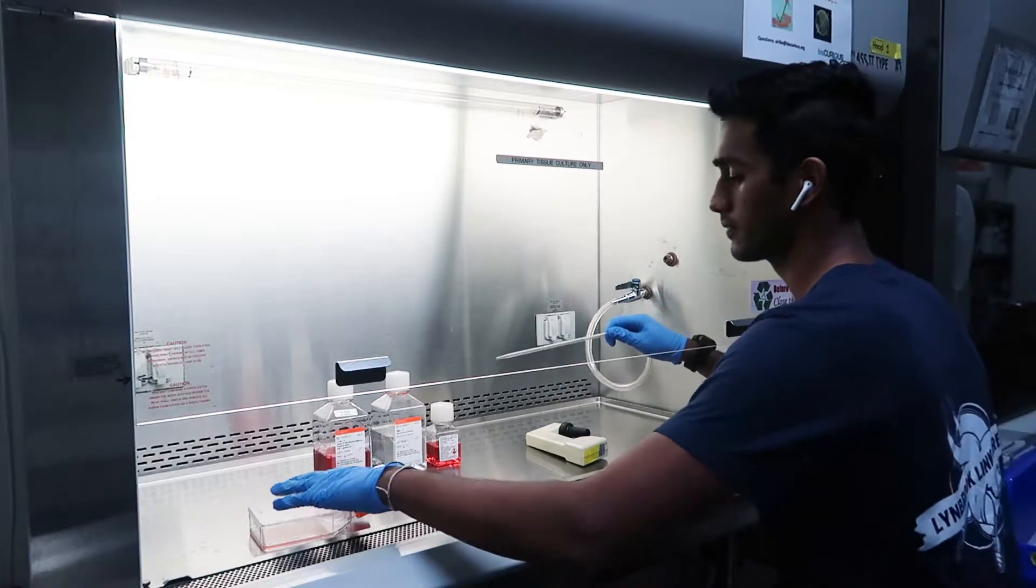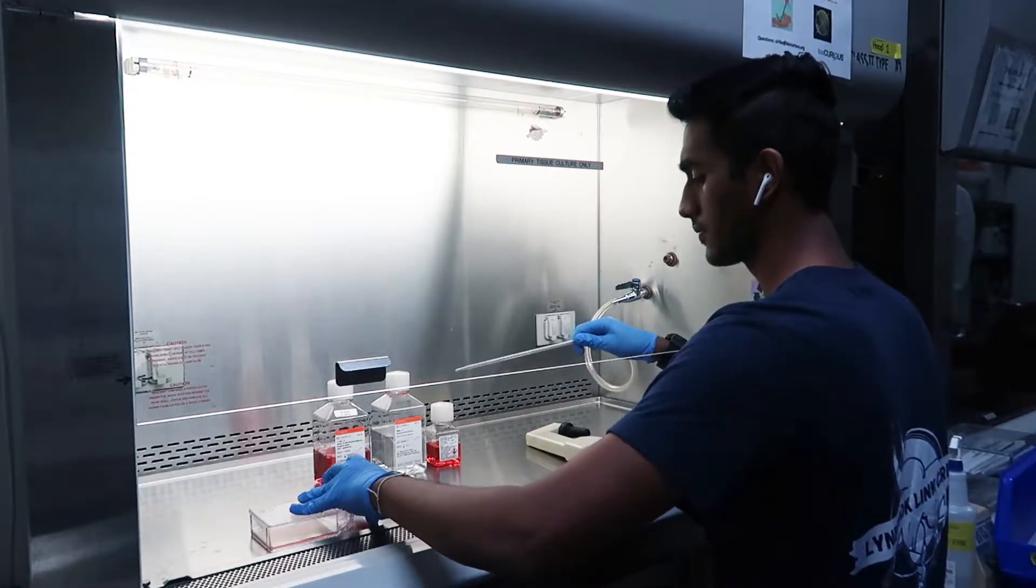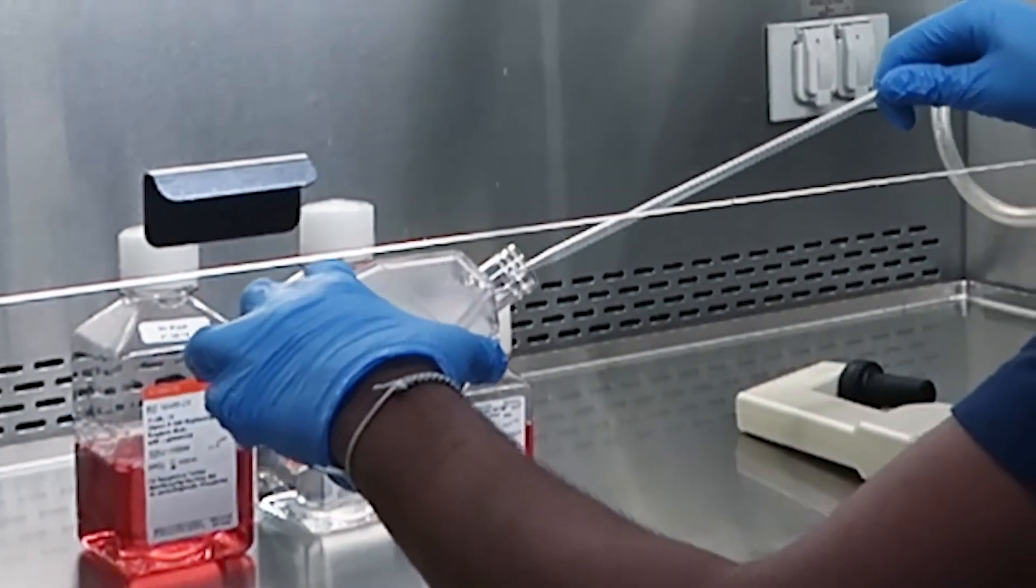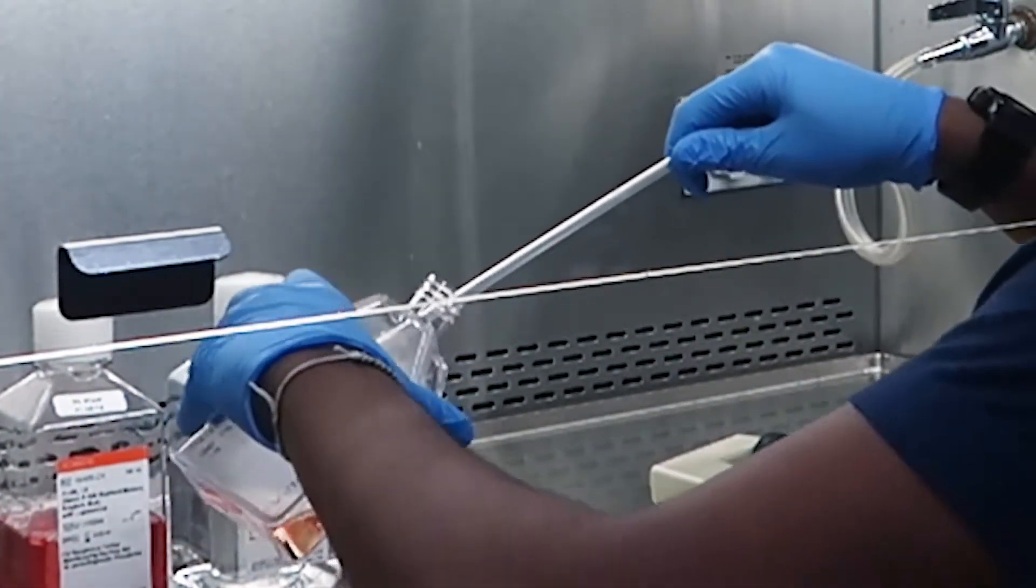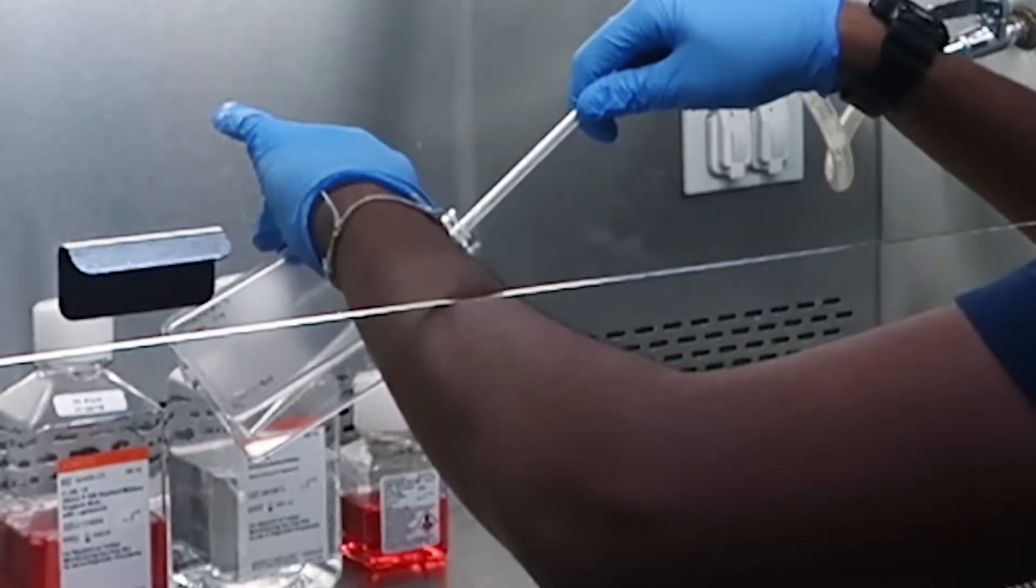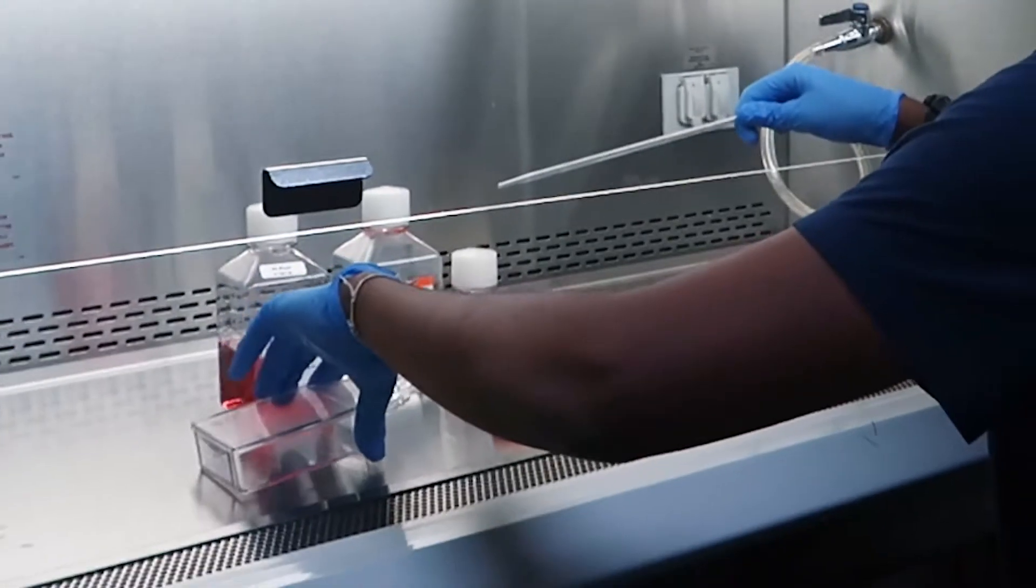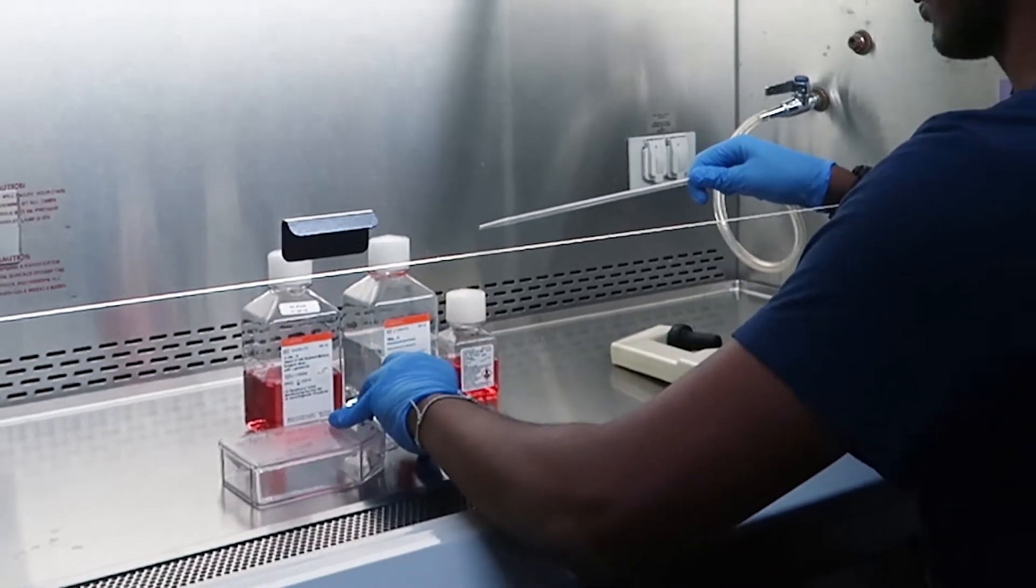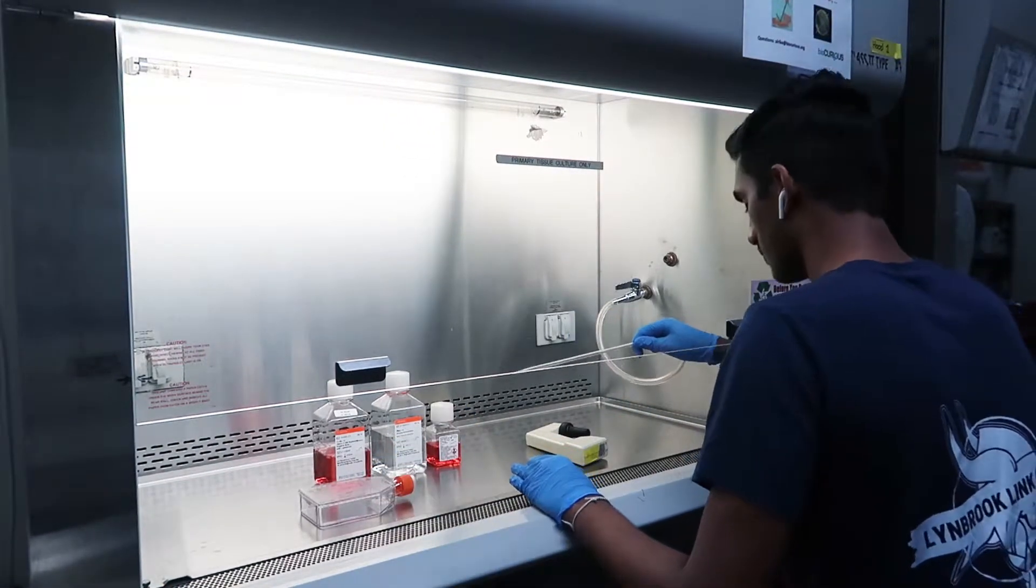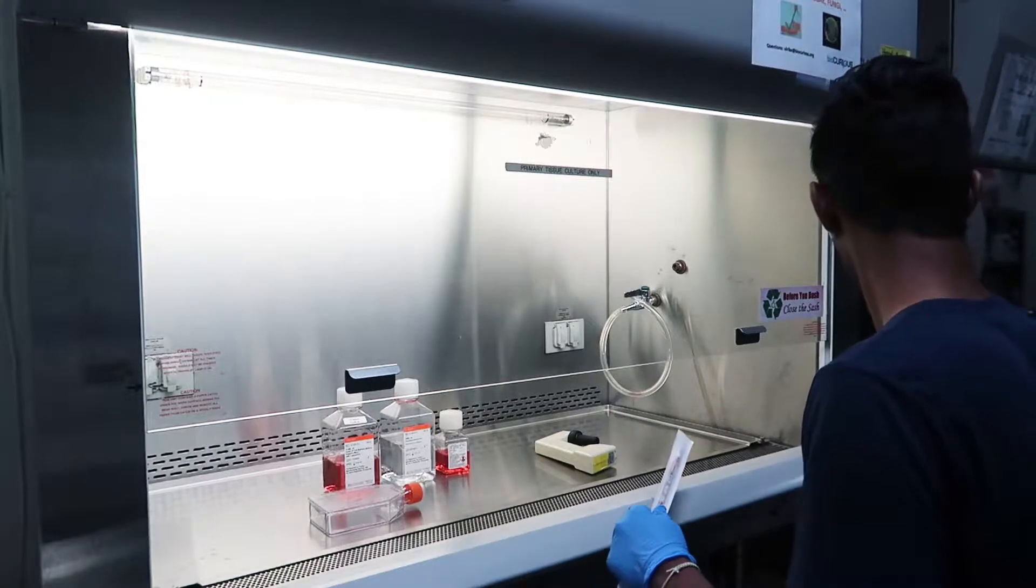Now here, I'm aspirating the medium out of my flask using an aspiration pipette connected to a suction lamp. Make sure when you do this that your flask is tilted so that all of the medium goes to a corner and your aspiration pipette does not touch the cells. Once you finish this step, discard your pipette into a biological waste bin.